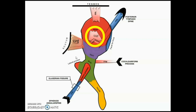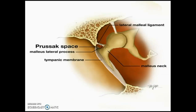Prussak's space lies between the lateral suspensory ligament and the lateral process of the malleus, just lateral to the neck of the malleus. It is a site of cholesteatoma, which is of surgical importance. You can see the scutum there — that is Prussak's space.